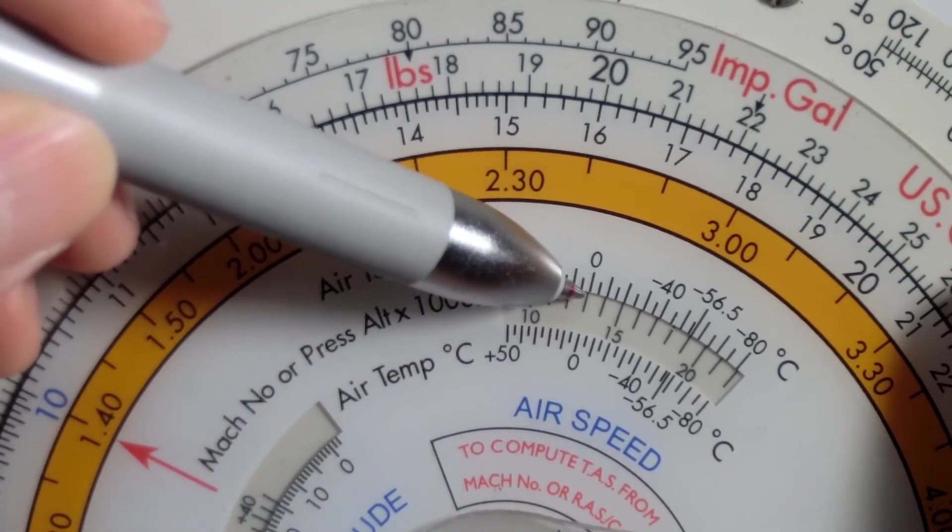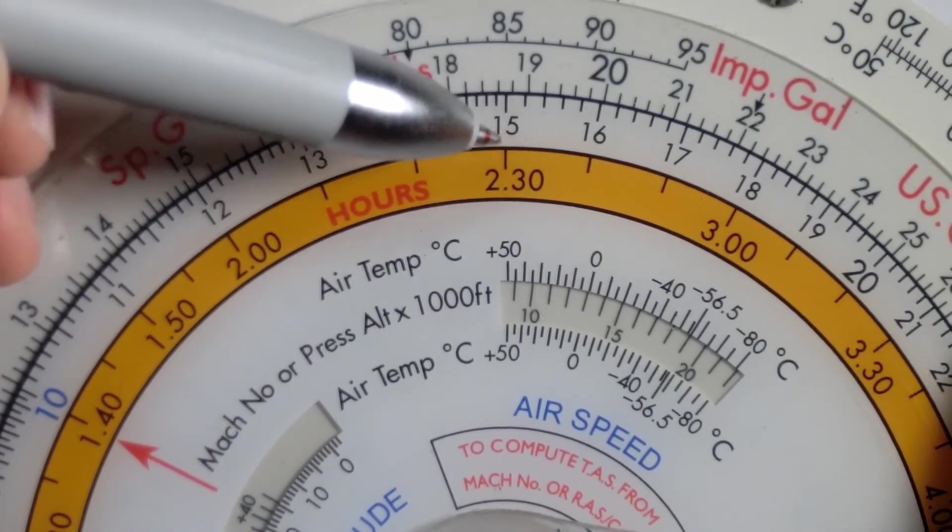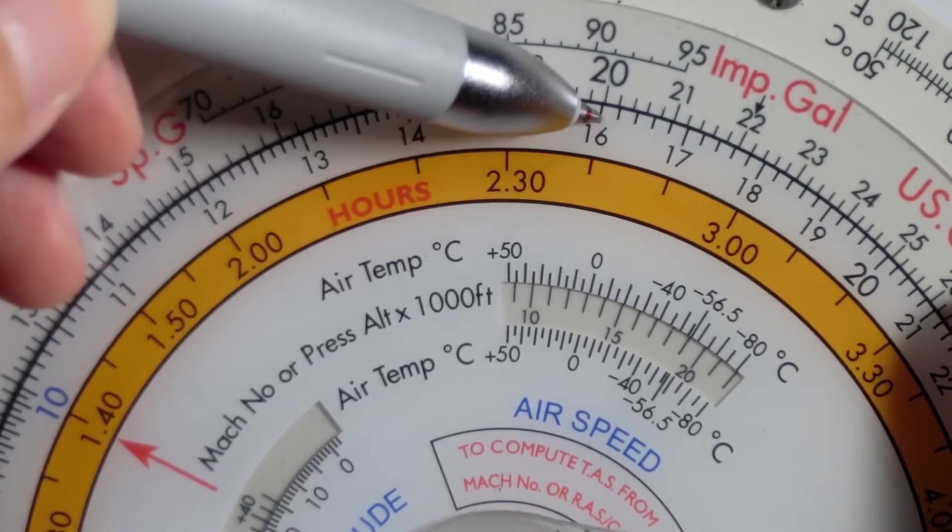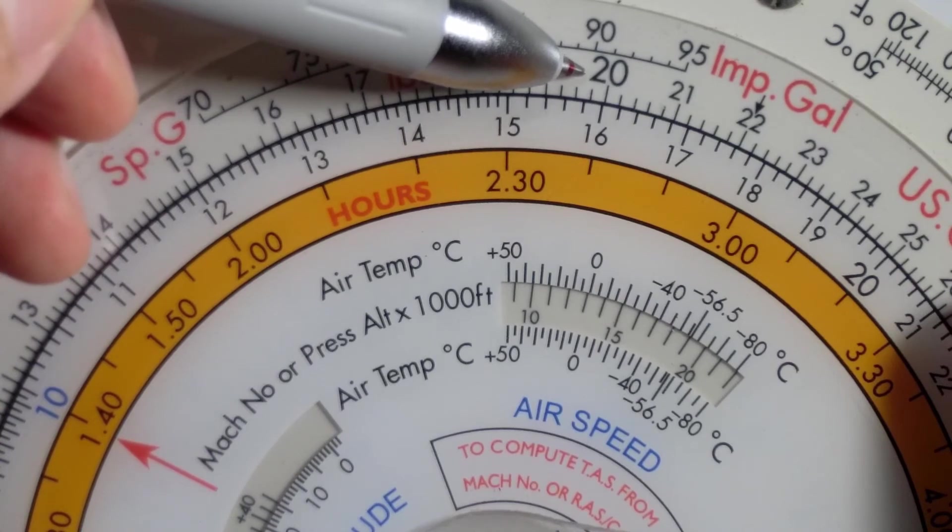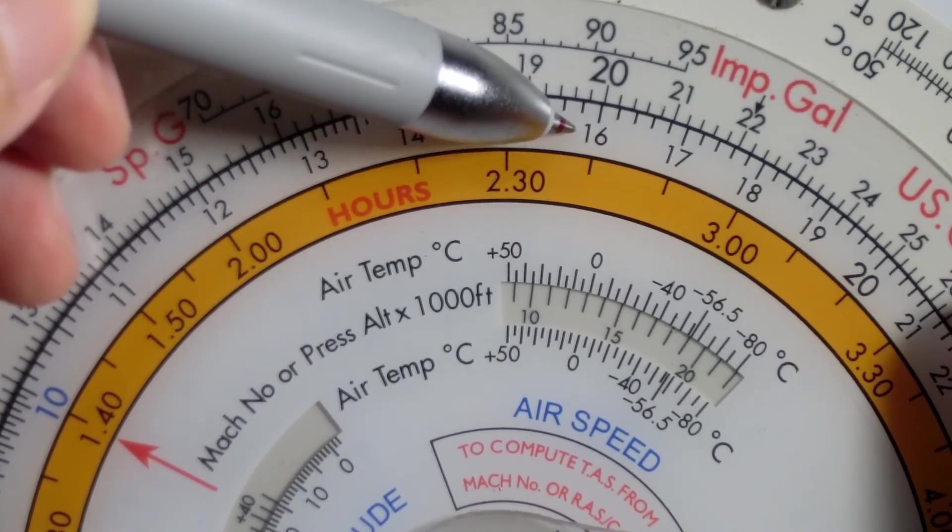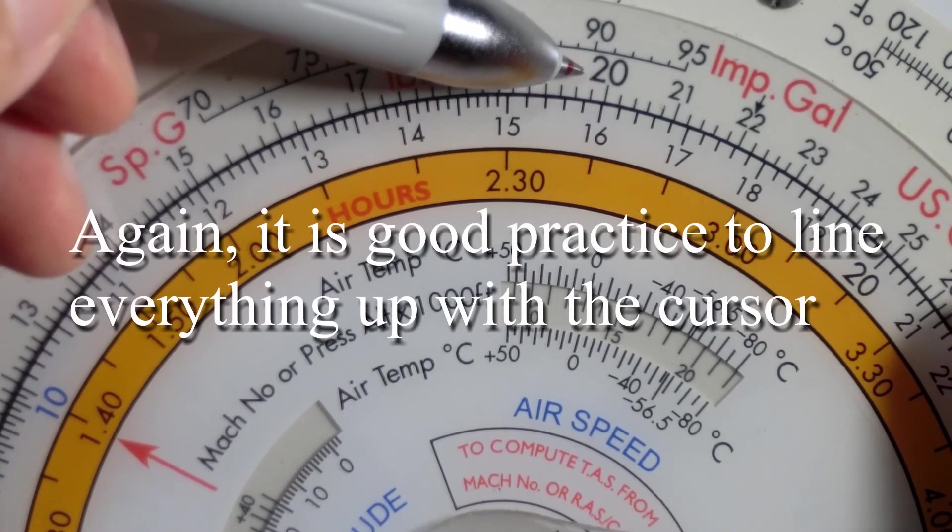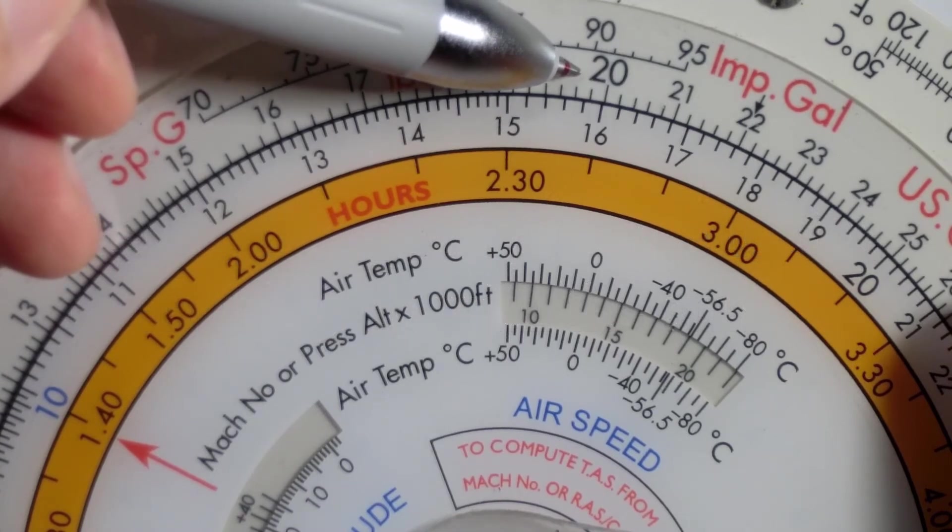For the speed of 160 knots, and that is rectified airspeed or calibrated airspeed, we actually have 200 knots. So 200 knots would be the true airspeed. And we can simply take 200 knots as our true airspeed because it is less than 300 knots.